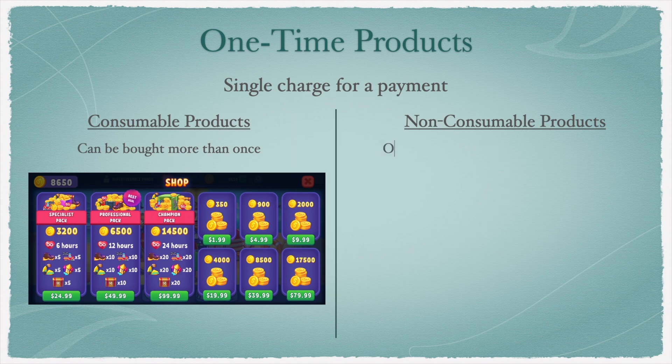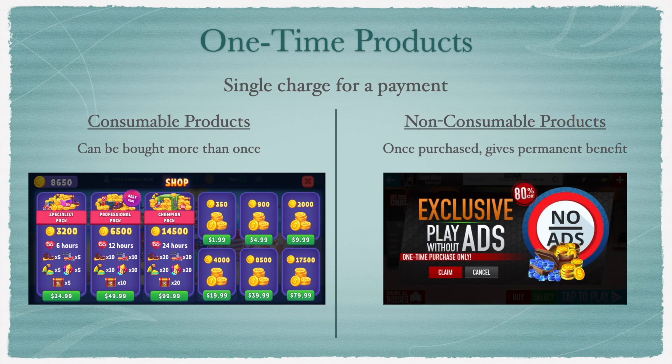A non-consumable product, when purchased once, provides a permanent benefit. For example: upgrading to premium, unlocking the next level, or removing ads. Once purchased, the user has access to them from all their devices at all times.